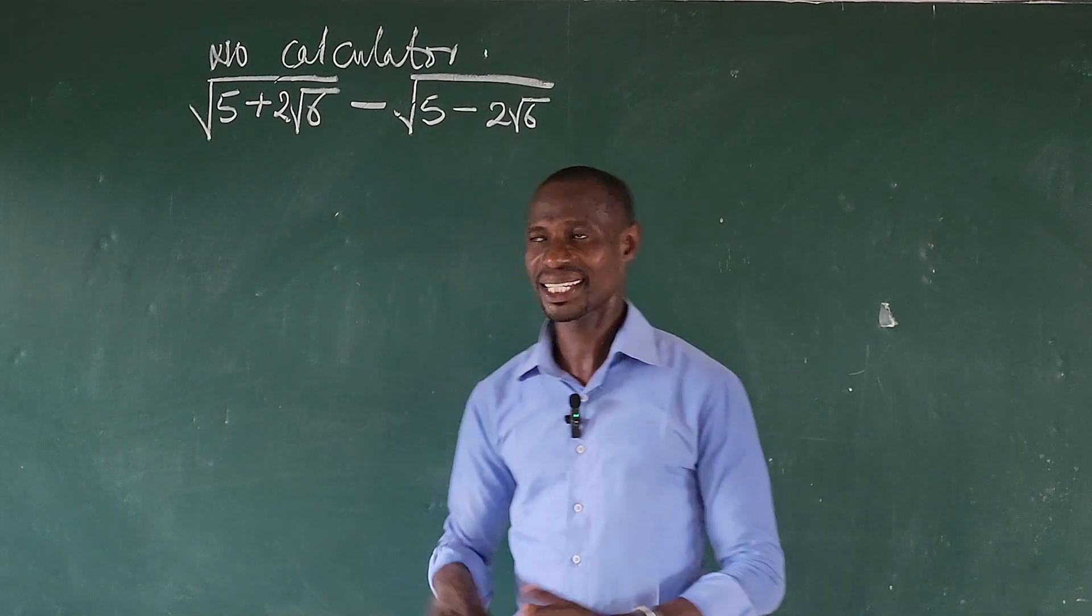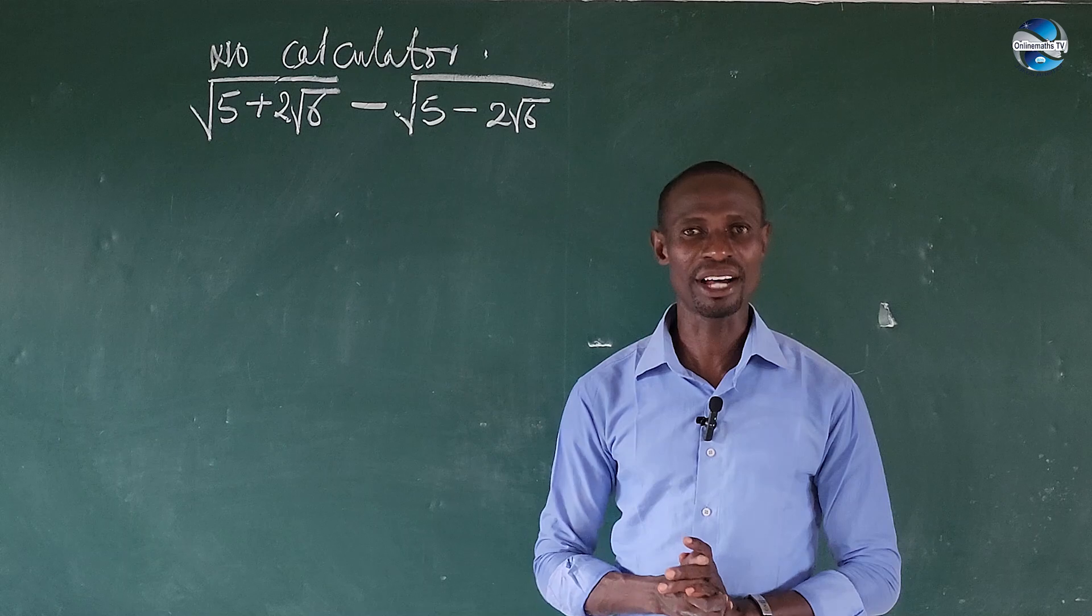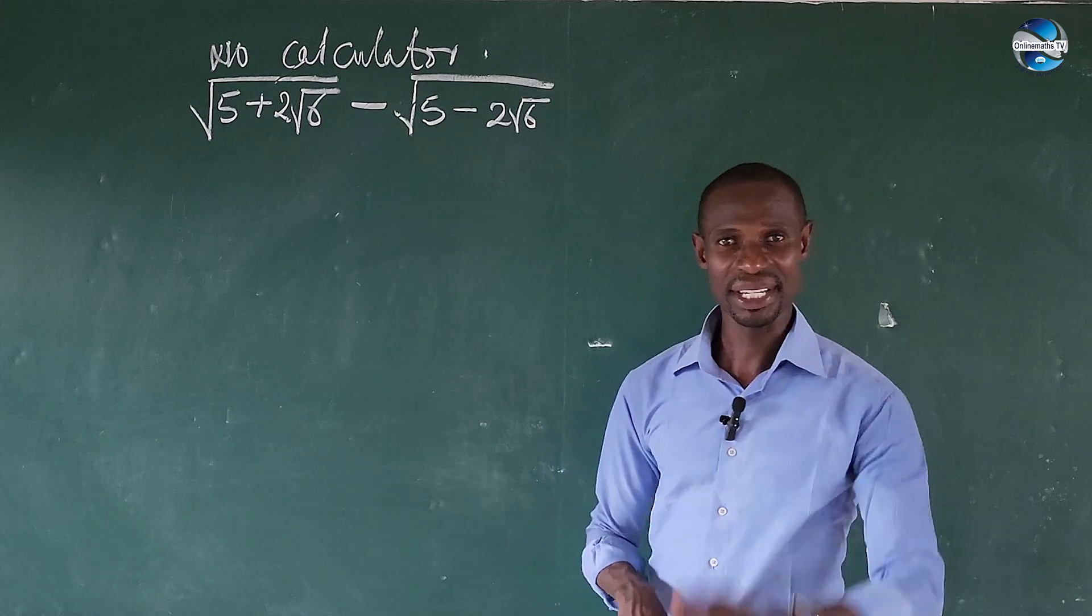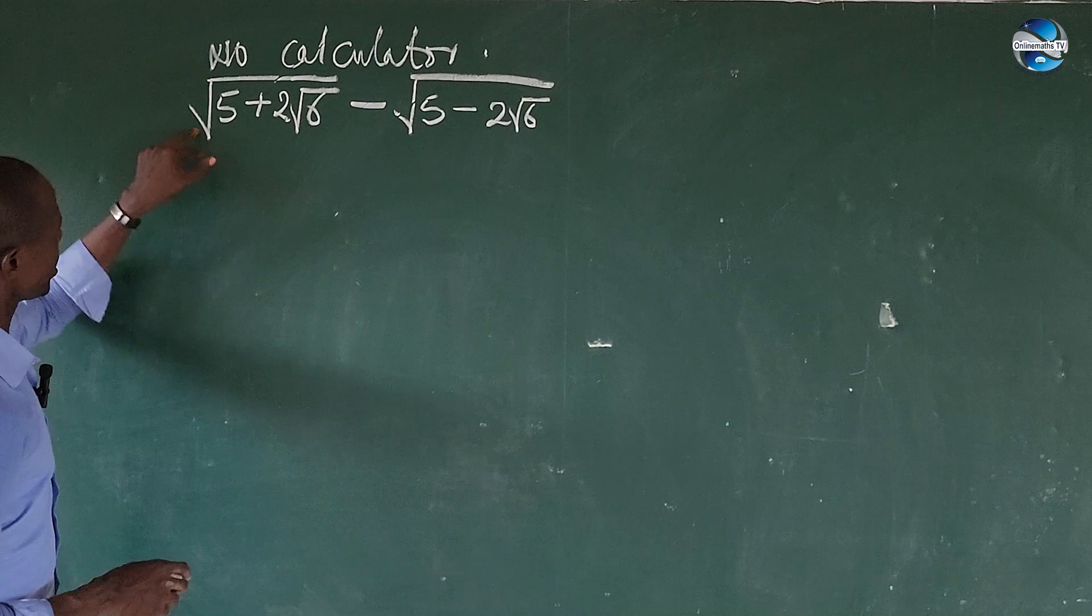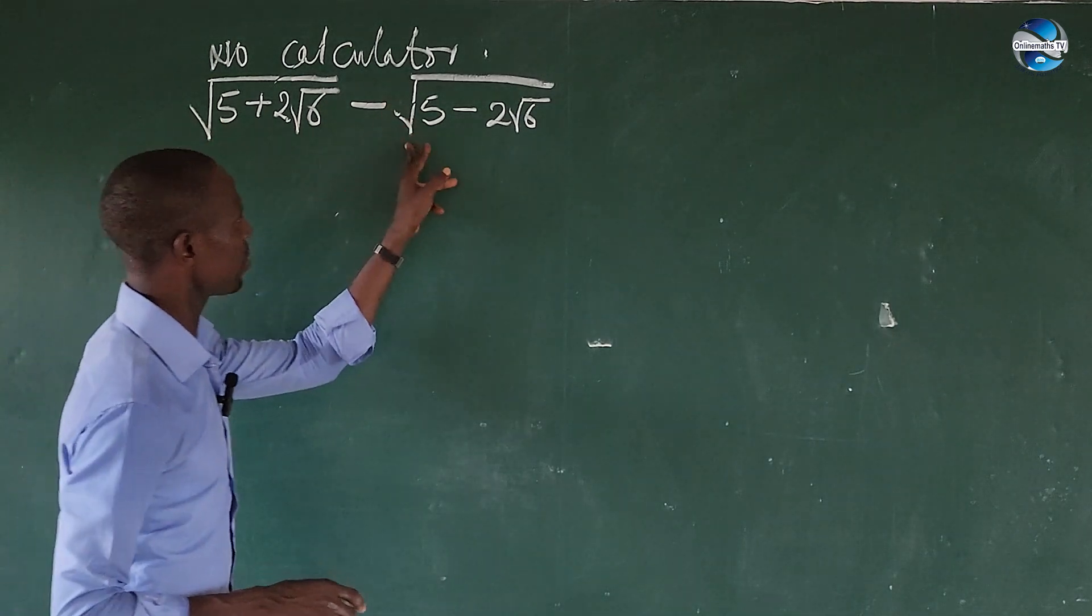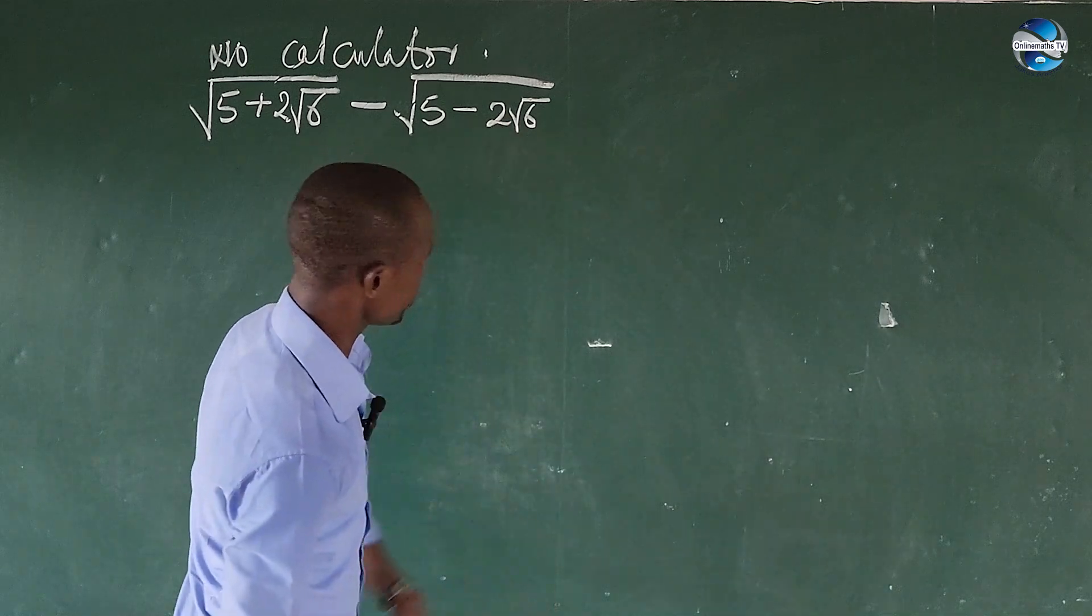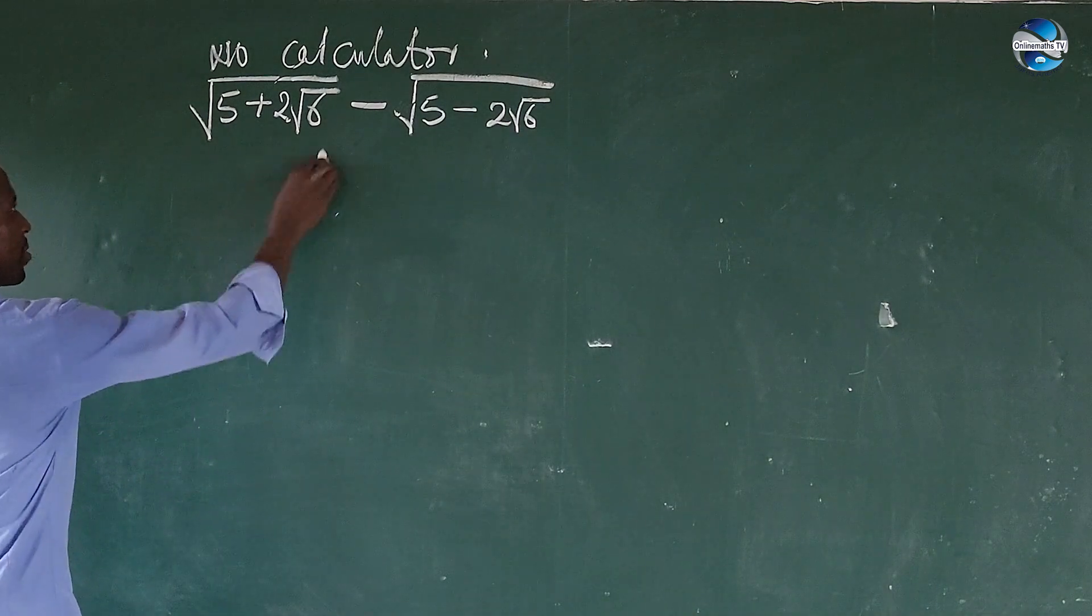Hello everyone, welcome to today's class. Look at this question - how do we simplify this without the use of calculator? The question is the square root of 5 plus 2 into the square root of 6 minus the square root of 5 minus 2 into the square root of 6. So without the use of calculator, how do we simplify this? Very easy.